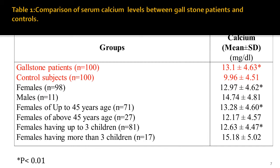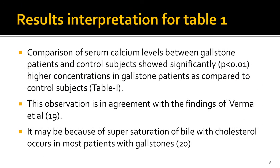In this table, I shall explain or interpret the gallstone patients and control group results. The serum calcium concentration of gallstone patients is significantly increased — p is less than 0.05 — highly increased as compared to control subjects, which is the comparison group. We have to support our results with literature. This observation is in agreement with the findings of Verma et al., meaning our results are comparable with Verma et al.'s findings.